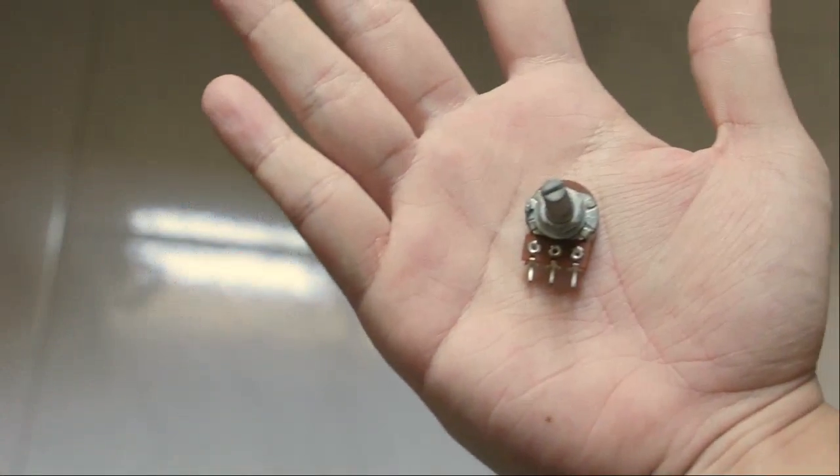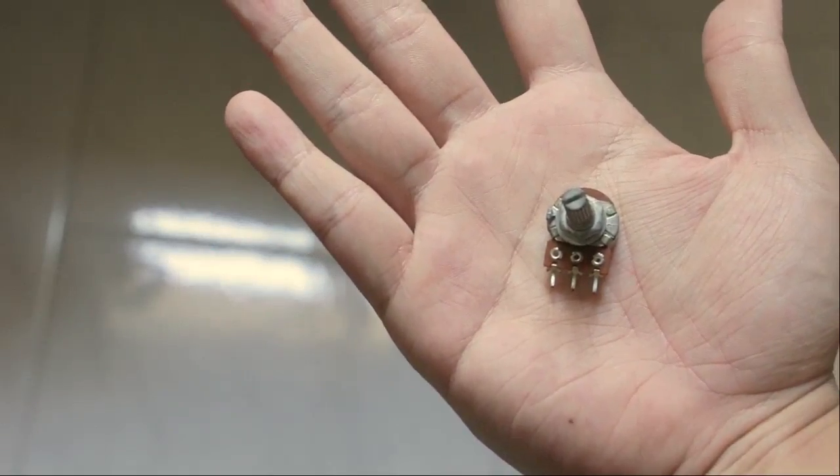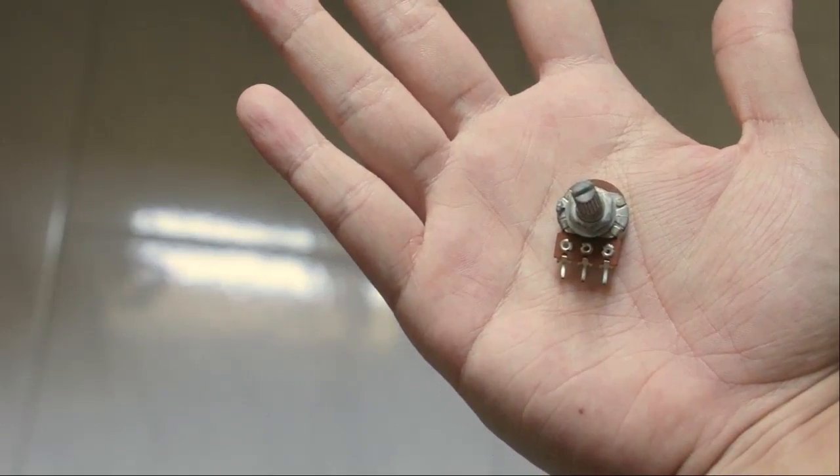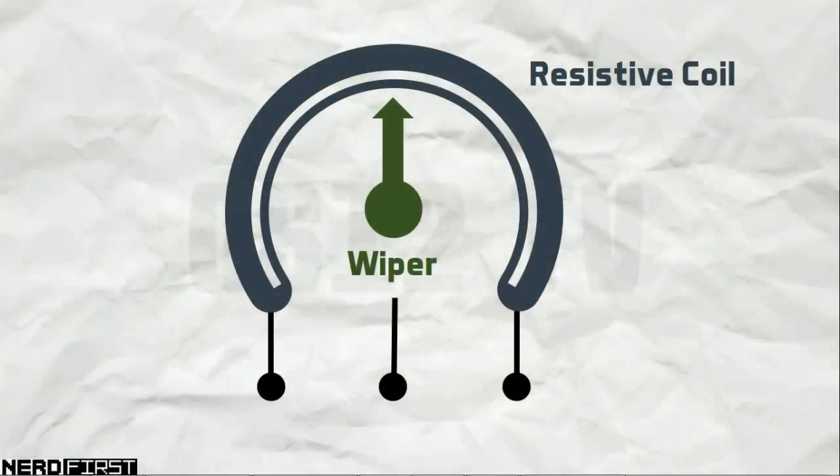A potentiometer is a simple component that allows you to easily build an adjustable potential divider. To understand why, we have to delve into its innards to see how it works. A potentiometer consists of a length of resistive wire in a coil. A rotating contact, called a wiper, makes contact with some part of the wire.